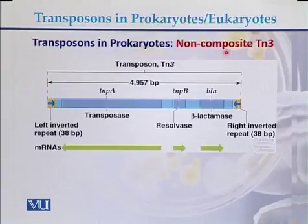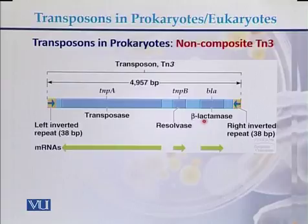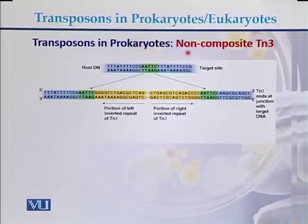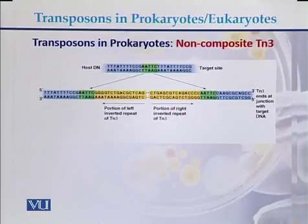An example of a non-composite transposon is TN3. TN3 contains additional genes — beta-lactamase, resolvase, and transposase — and has inverted repeats on both ends but no IS elements. This diagram also shows the sequence of a portion of the left and right inverted repeats present on both ends of the transposon.